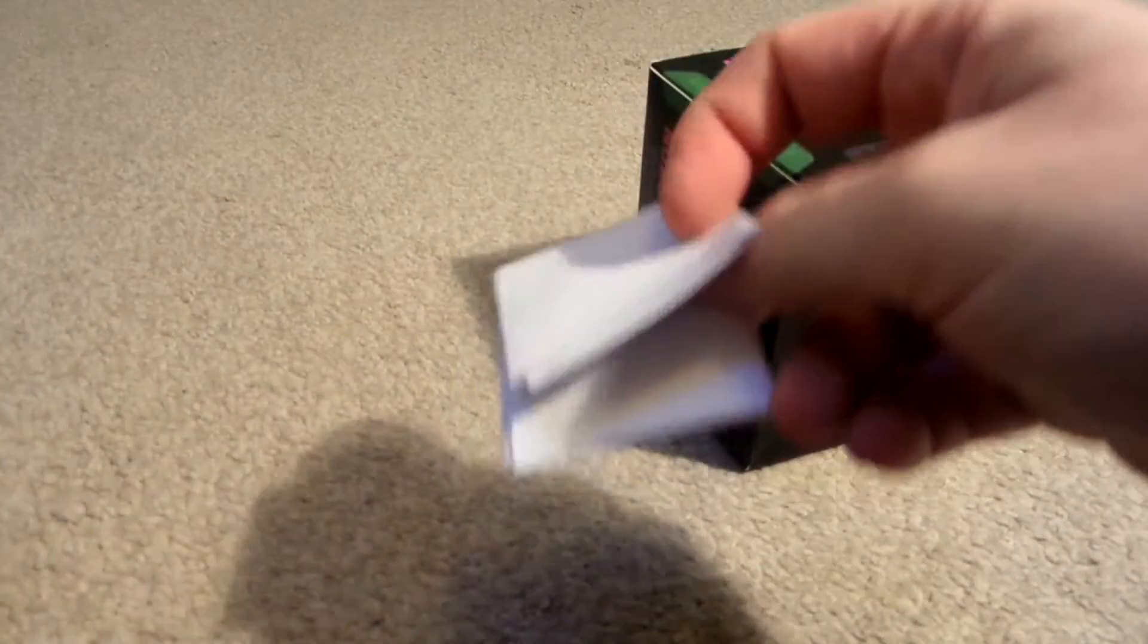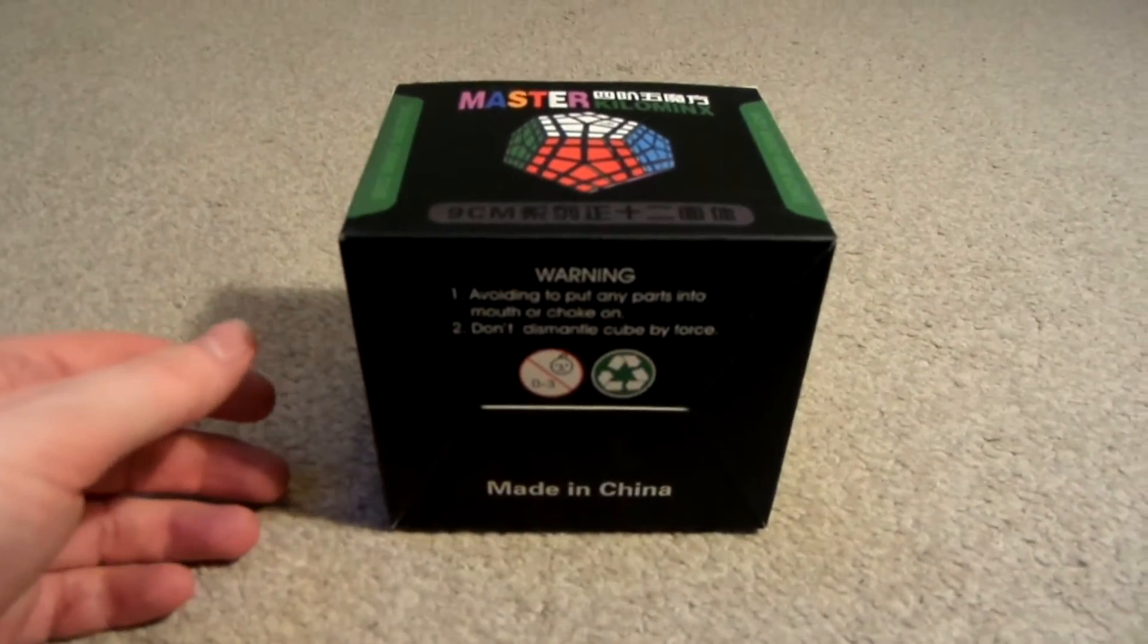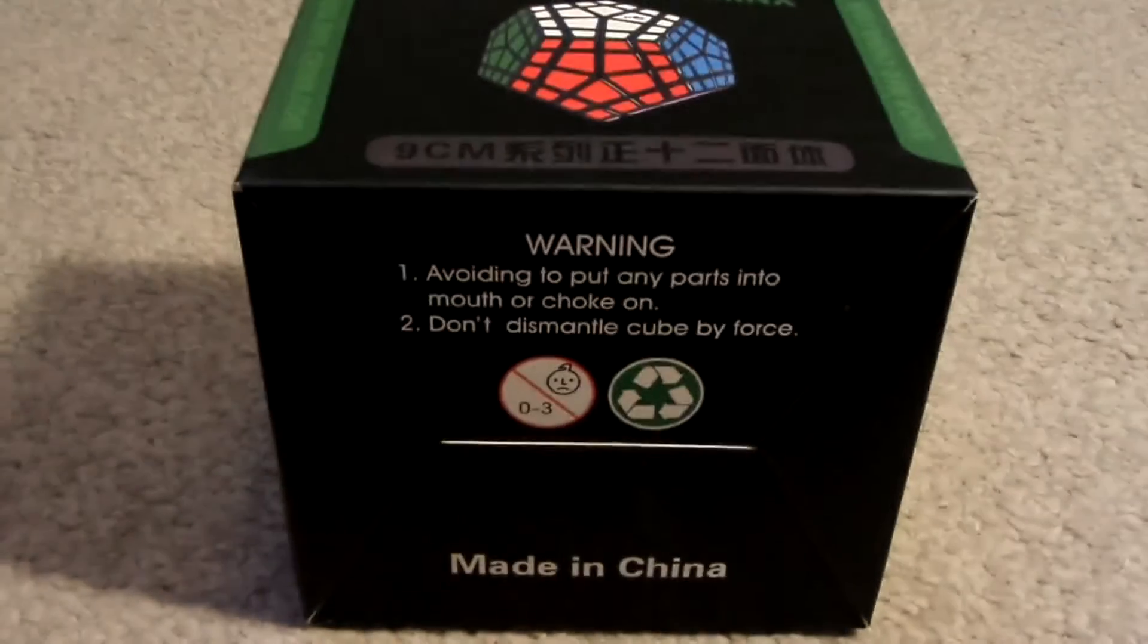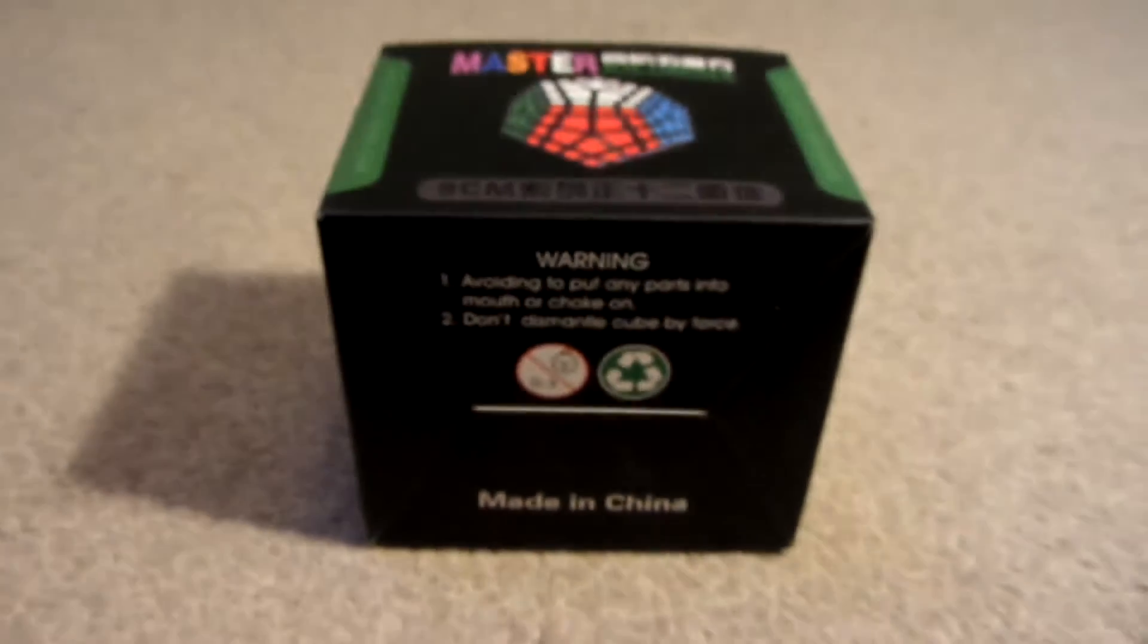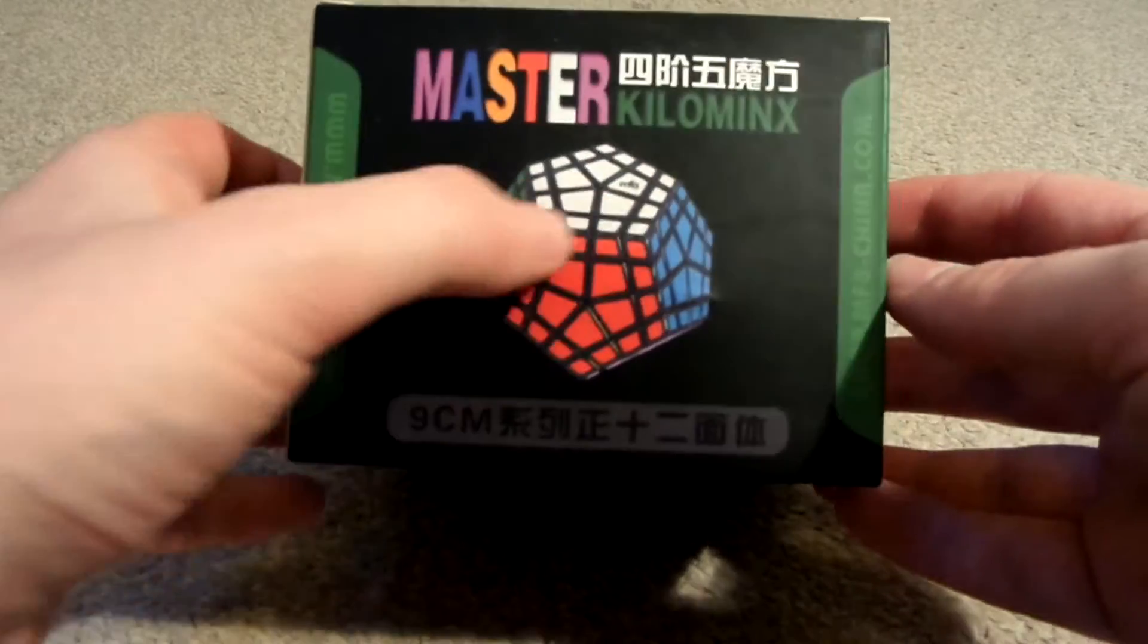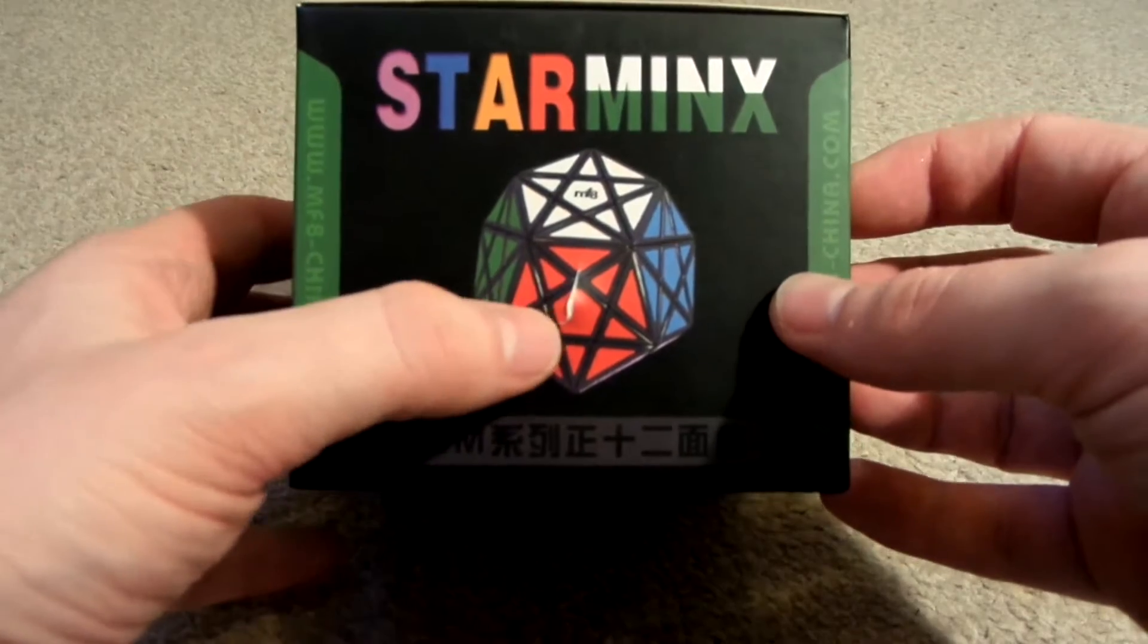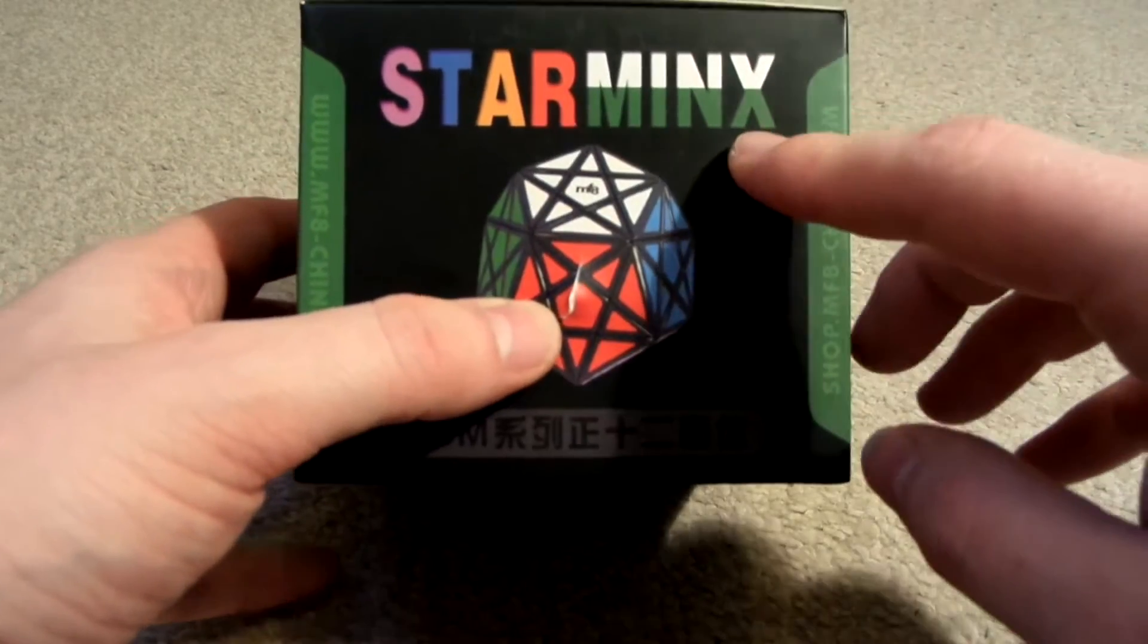So this should be the invoice. Let's make sure I'm in focus. So in this box we've got a Kilaminx, I've already got one of those. We've got a Star Minx, which is what should be inside. Hopefully it's the limited edition one.